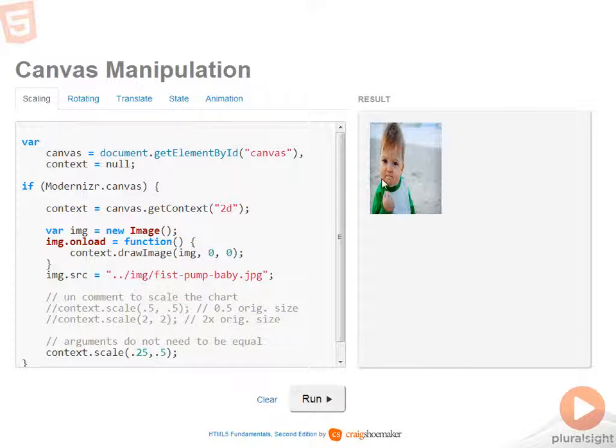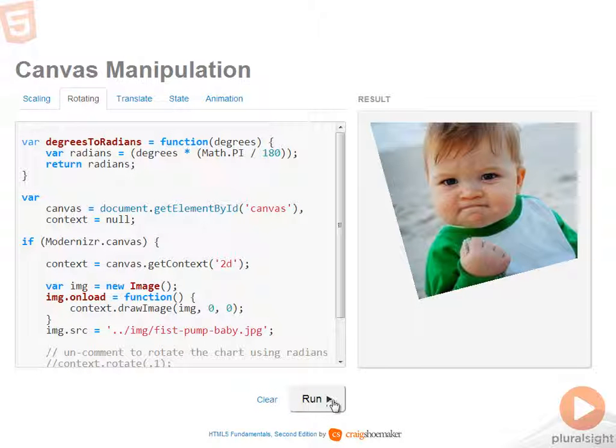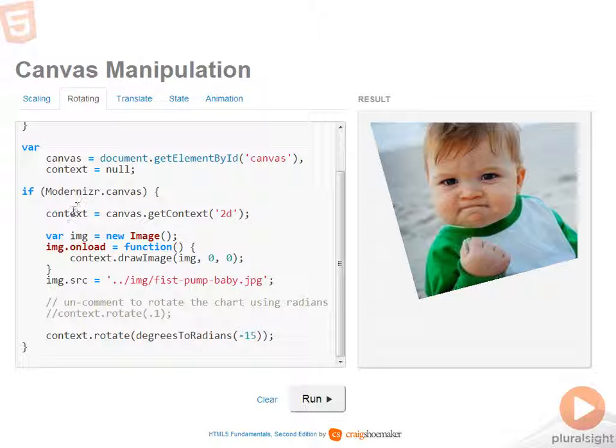So now that you've seen how to scale the canvas, let's take a look at rotating the canvas. So first, let's take a look at the final result. So the image is drawn onto the canvas and then the entire canvas is rotated. Coming down here, you can see that once we have the context available, then I create a new image. Once that image is loaded, then it's drawn onto the canvas by using context.drawImage.